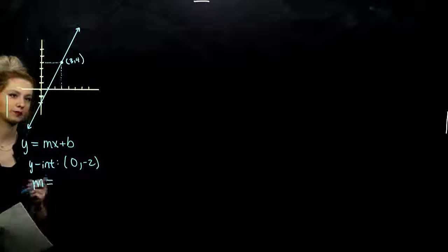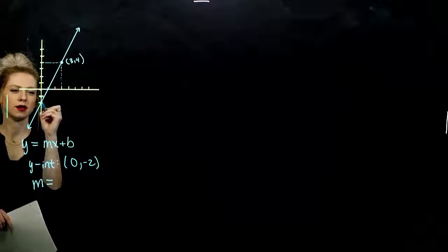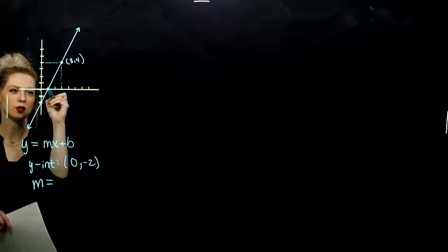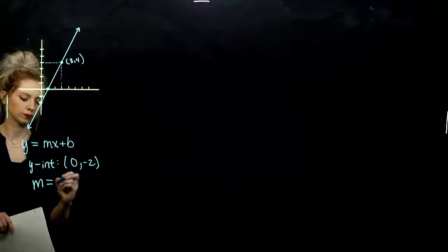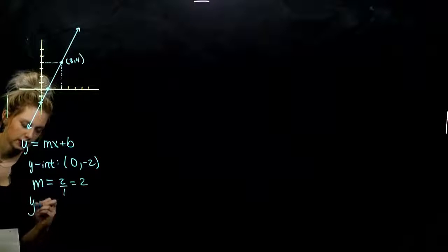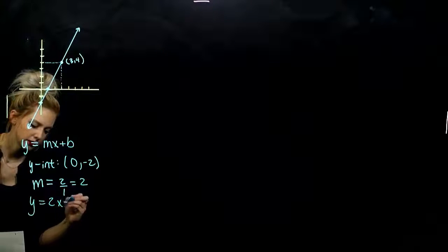And what is my slope? If I start from one point, I need to go up 2 over 1 to hit another point. Up 2 over 1. So my slope is 2. So the equation of the line, y equals 2x minus 2.